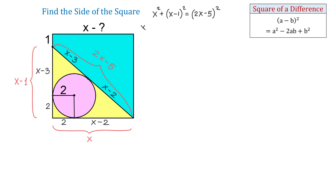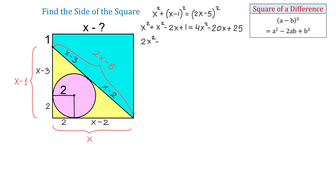On the left side we will have x squared plus x squared minus 2x plus 1. On the right side, using the same formula, we will have 4x squared minus 20x plus 25. We will get the same result if we multiply (2x minus 5) by another (2x minus 5). Then on the left side, x squared plus x squared is 2x squared, giving us 2x squared minus 2x plus 1 equals 4x squared minus 20x plus 25.